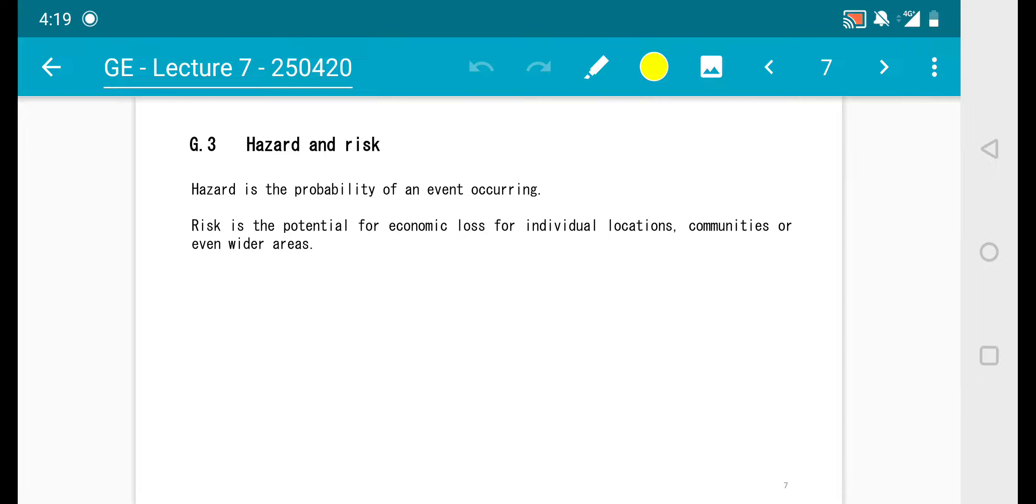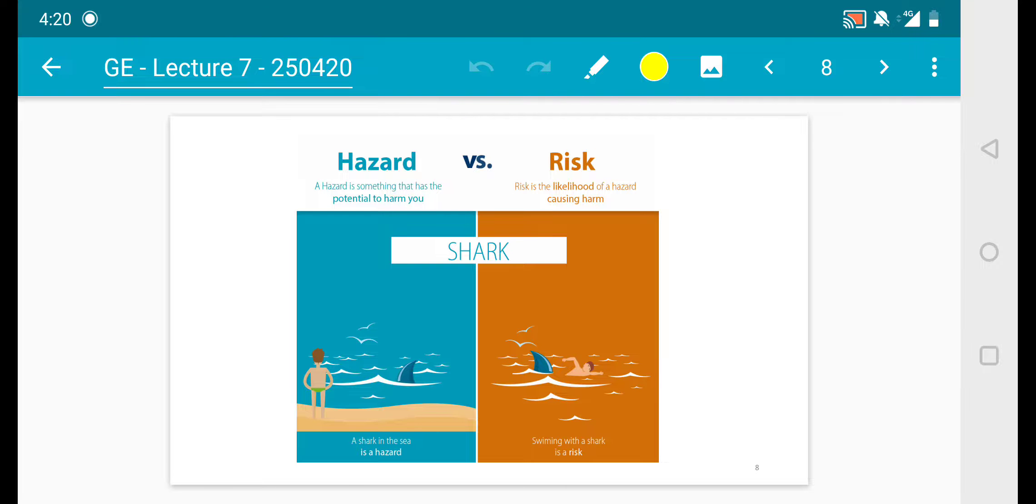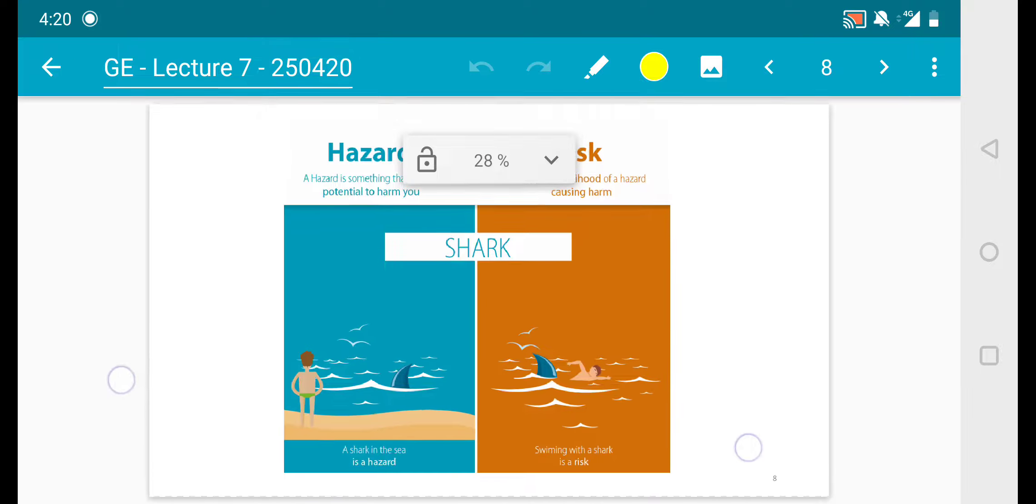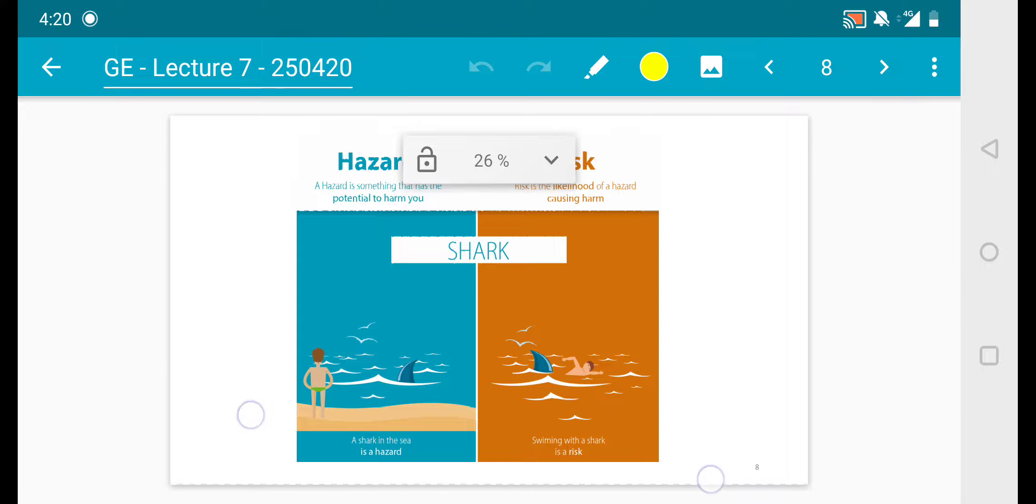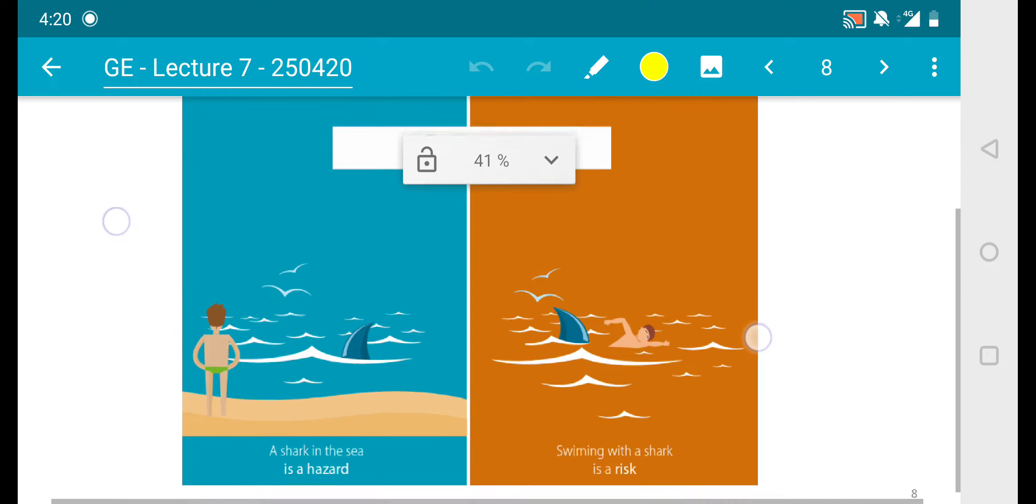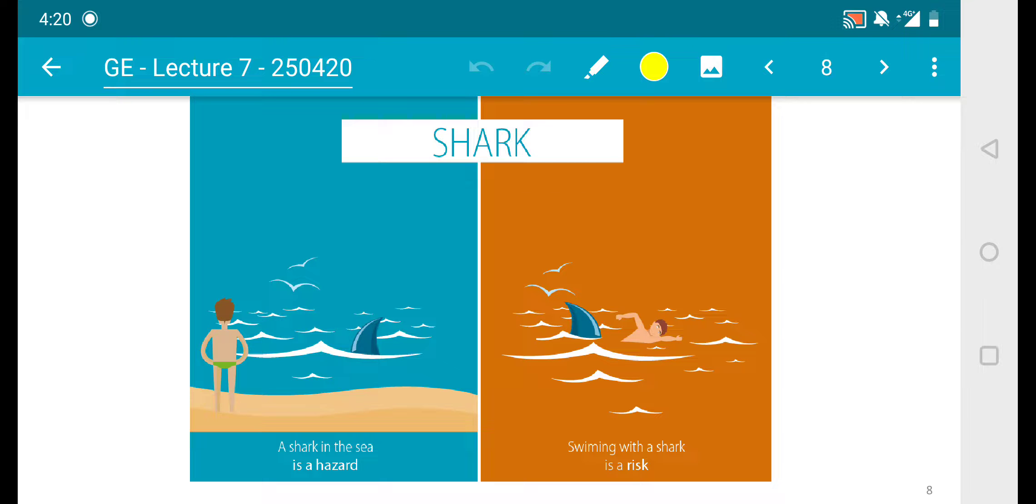You should understand the difference between hazards and risks. Hazard in statement is the probability of an event occurring. Risk is the potential for economic loss for individual location, communities, or even wider areas. If you look at a simple figure over here, hazard is something that has the potential to harm you. When you're standing next to a shark on land and the shark is in the sea, the shark in the sea is the hazard.